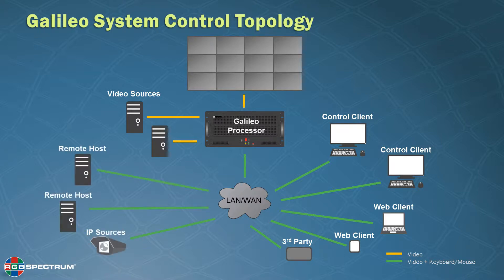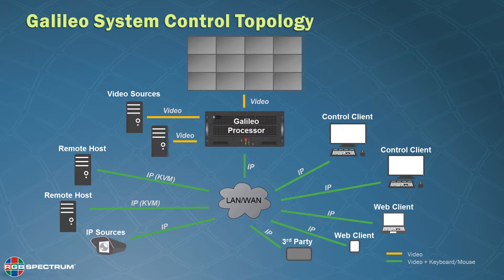Also connected are Galileo remote hosts for KVM and video control, and IP sources that can be decoded directly on the Galileo processor. So Galileo accepts a wide range of video inputs directly on the processor, and IP inputs for KVM control of remote hosts, or decoding of other IP sources. Galileo also runs applications directly on the processor.